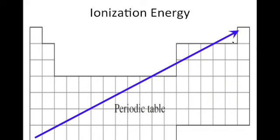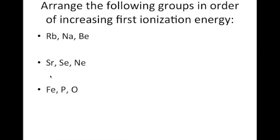So that's the general picture of the ionization energy trend. Now arrange the following in order of increasing first ionization energy, from lowest to highest: rubidium is in period 5, group 1; sodium is in period 3, group 1; and beryllium is in period 2, group 2. The lowest ionization energy goes to the one with the most energy levels, and the highest goes to the one with the least. So it's actually already in order.